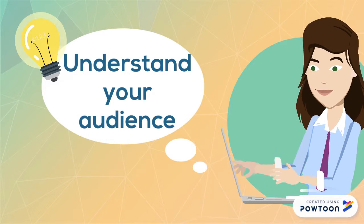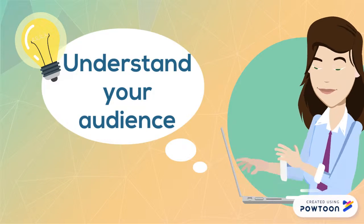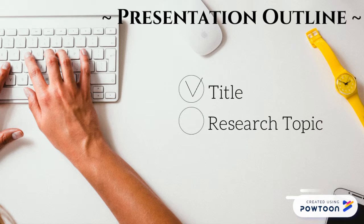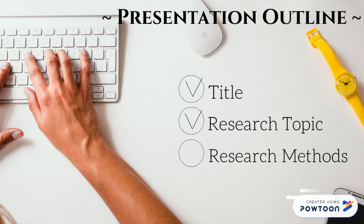Presentation outline — these are the key factors that your presentation should consist of. Title: the title tells people what your research is about. Research topic: the research topic explains what you've studied and why. Research methods: the research methods talk about the data that you've gathered and the methods you used to collect it.